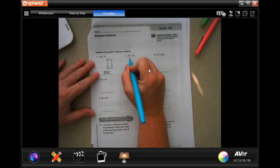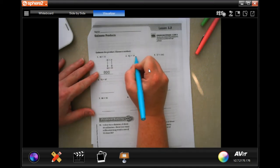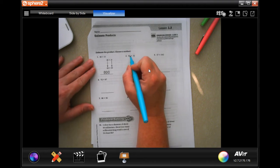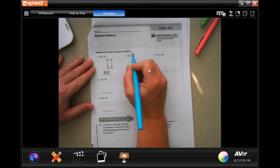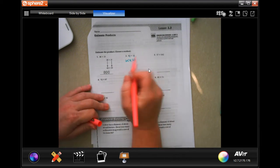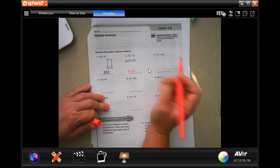So if we start estimating, we look at the second number. The three does not tell the six to go up because it's less than five. Remember if it's five or bigger than it goes up. If it's less than five, it stays the same. So we're going to have 60 times and that nine does tell the one to go up. So 60 times 20. Now we're going to go ahead and six times two is 12. Then I'm going to add my two zeros. Easy peasy.